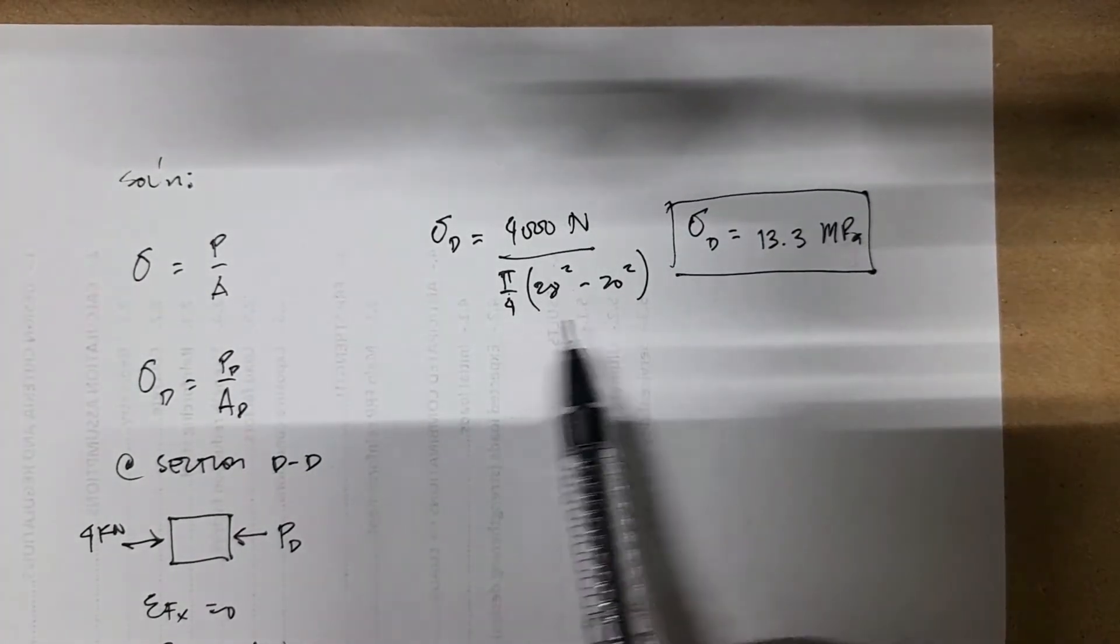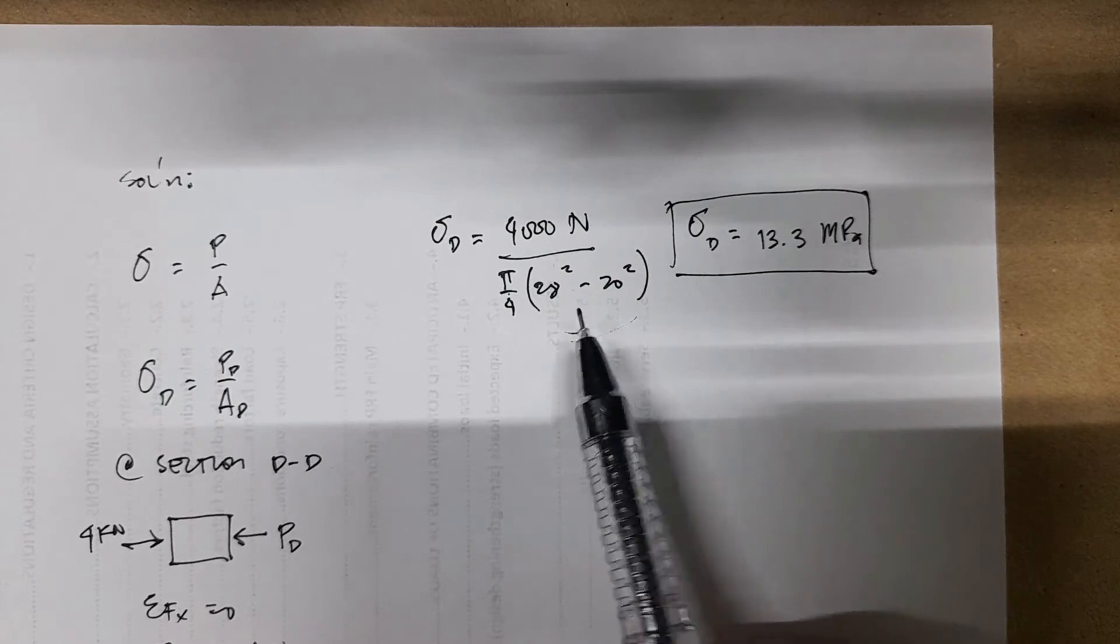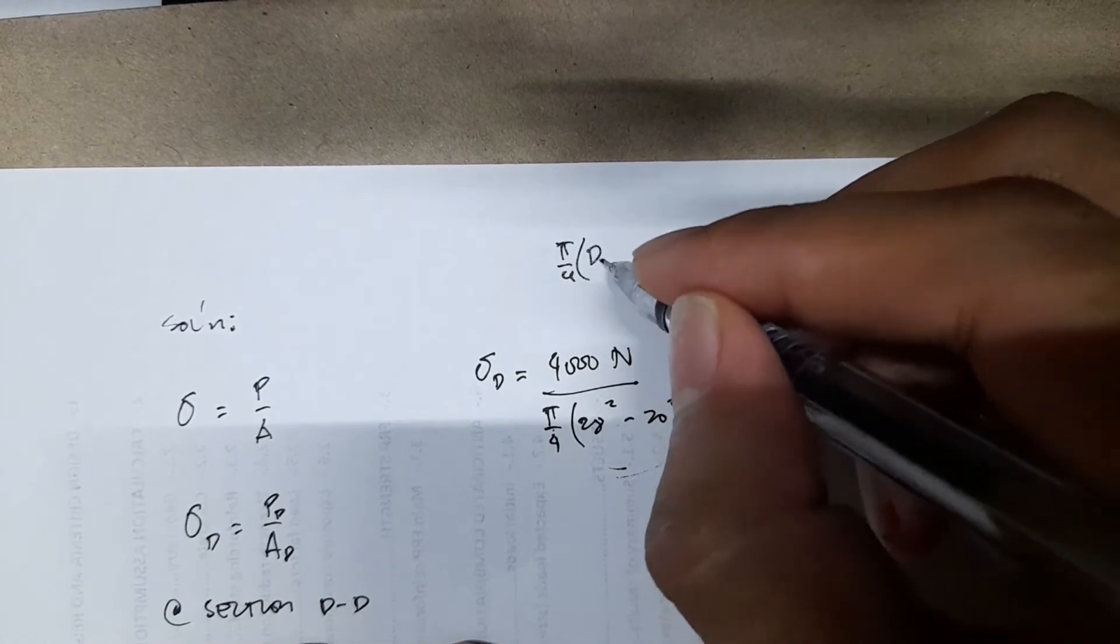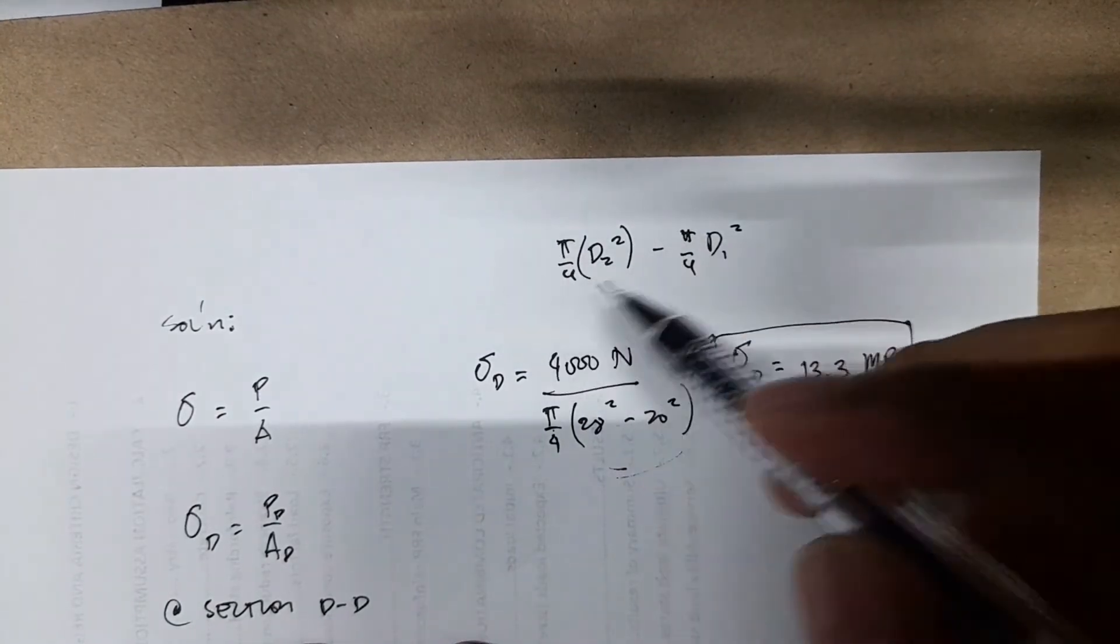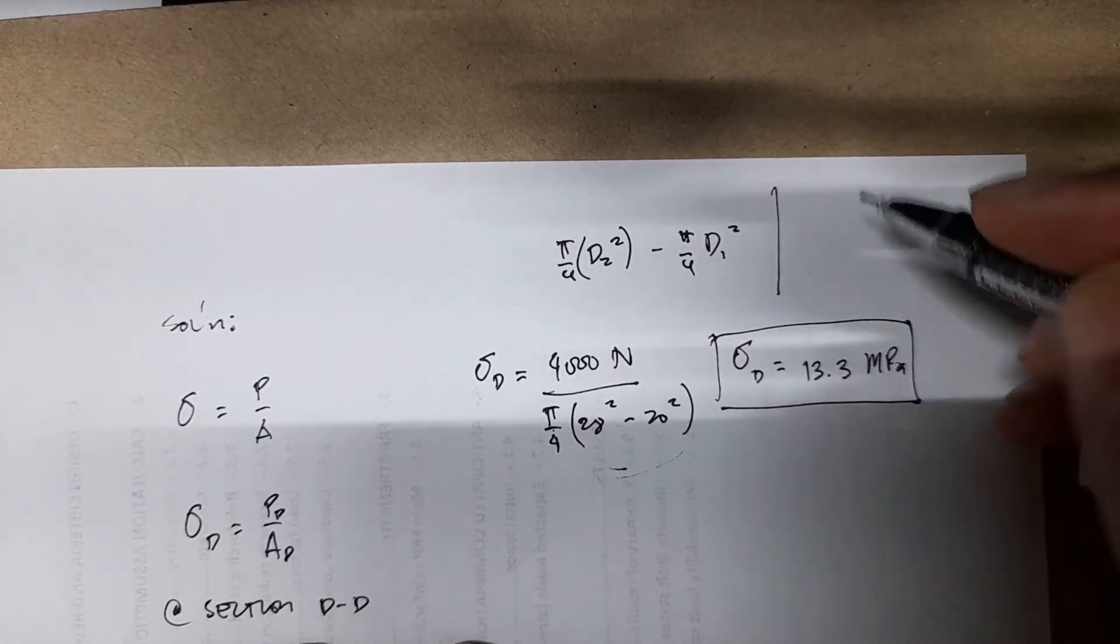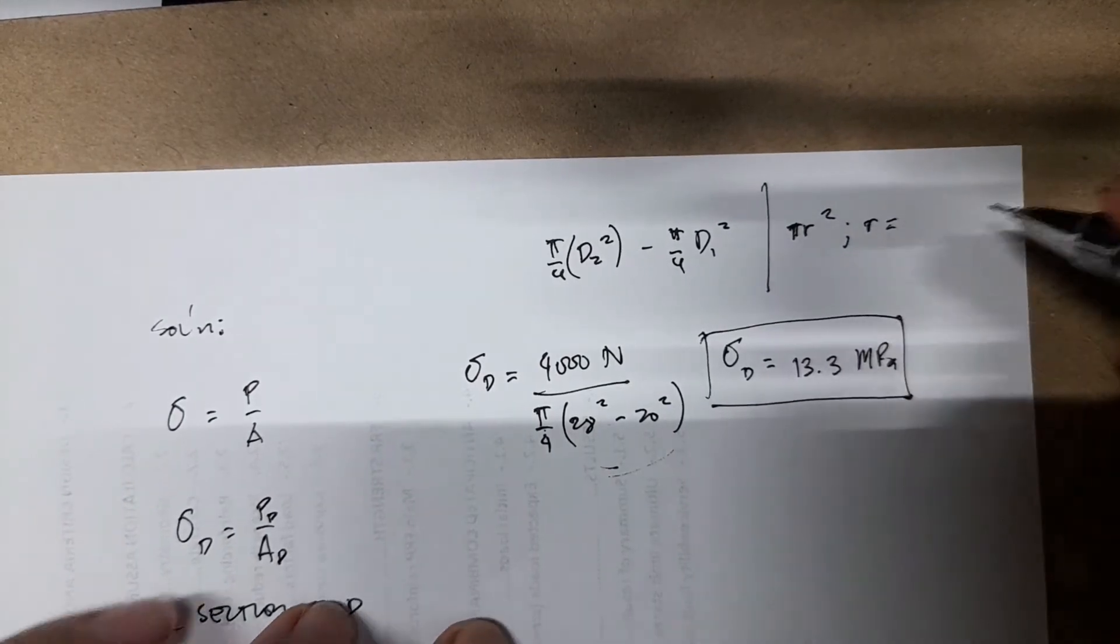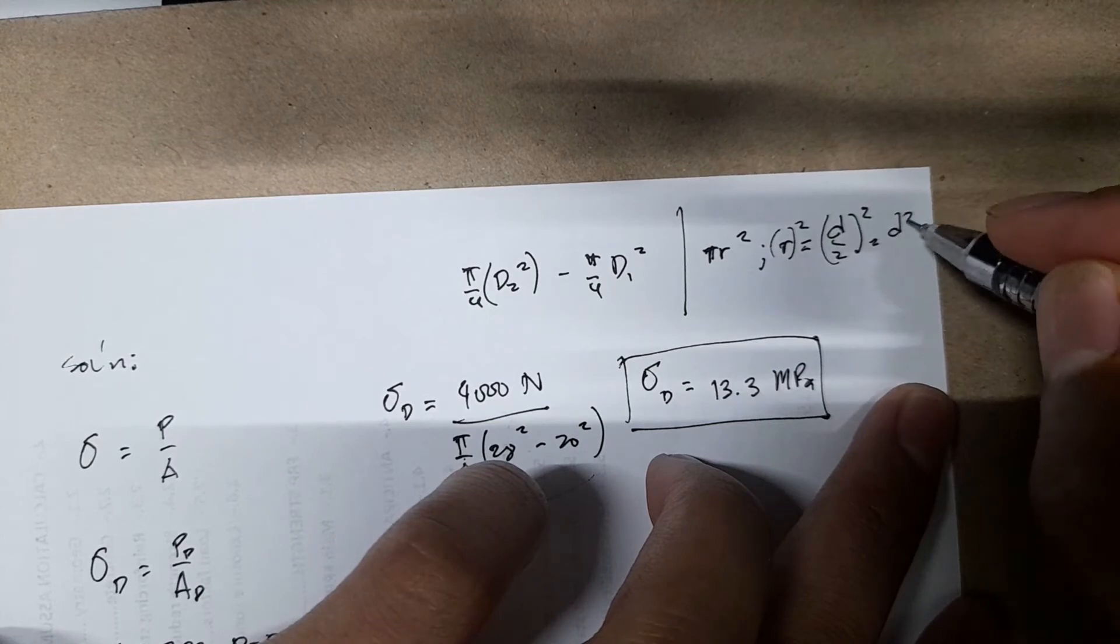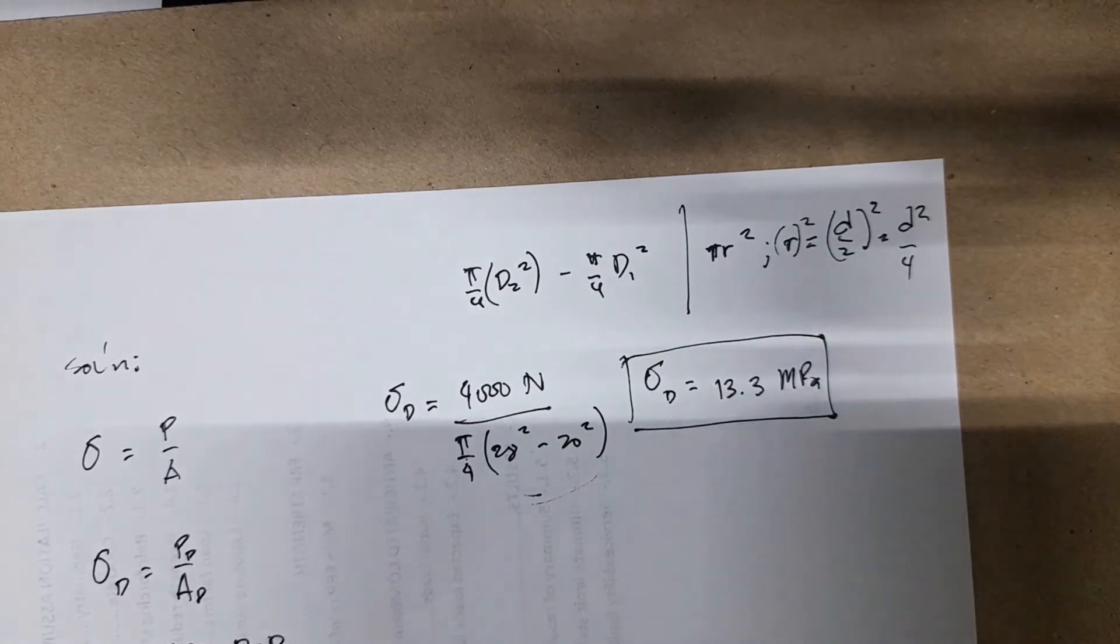If you want to be refreshed on this, we discussed this in another example. But basically, it just came from the pi over 4. You have the area outer, D2 squared minus the pi over 4, D1 squared. And then you have the common term here, pi over 4, you just have to take that out and then retain the two given diameters. If you're confused with the pi over 4, it comes from pi R squared. And then you know that R is just D over 2. So when you square this one, you'll have D squared over 4. So that's why you have the pi over 4.